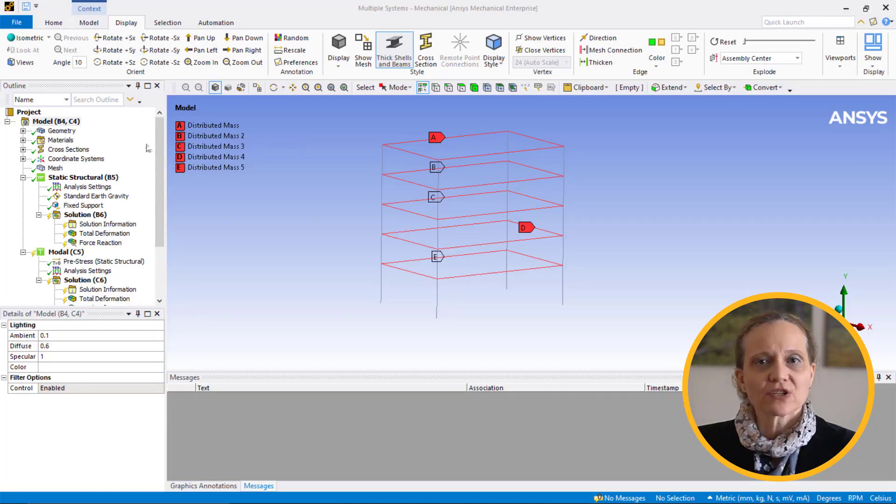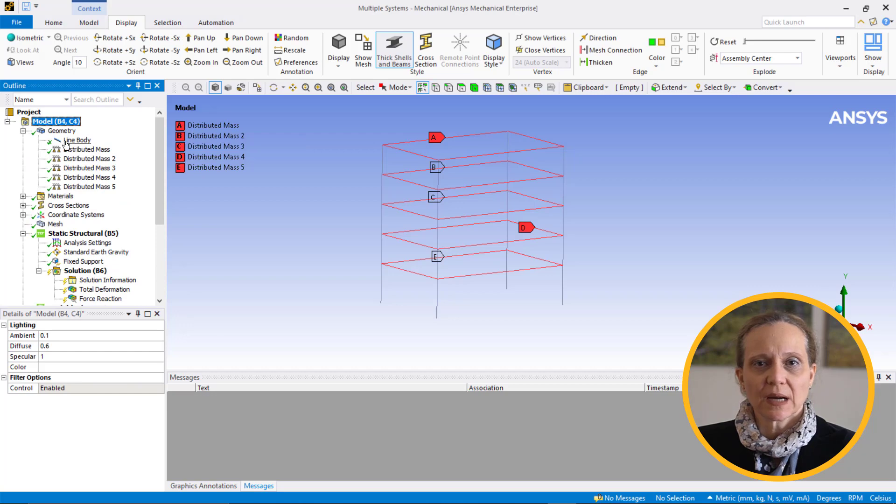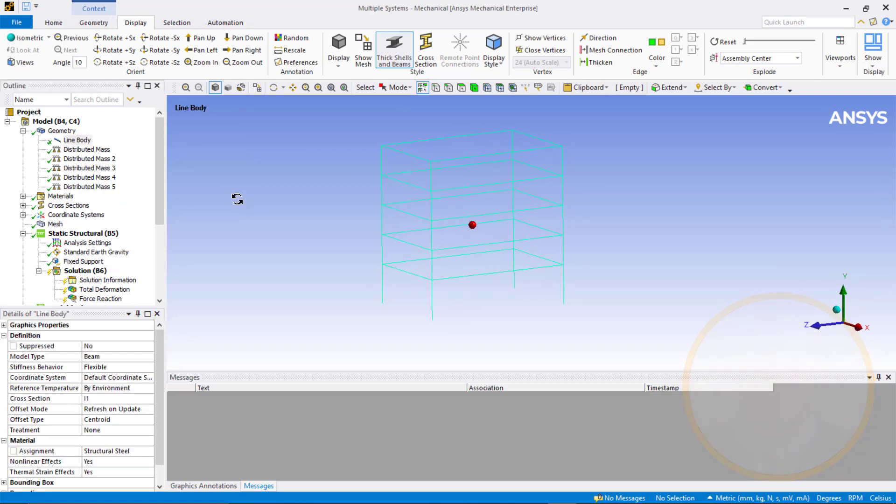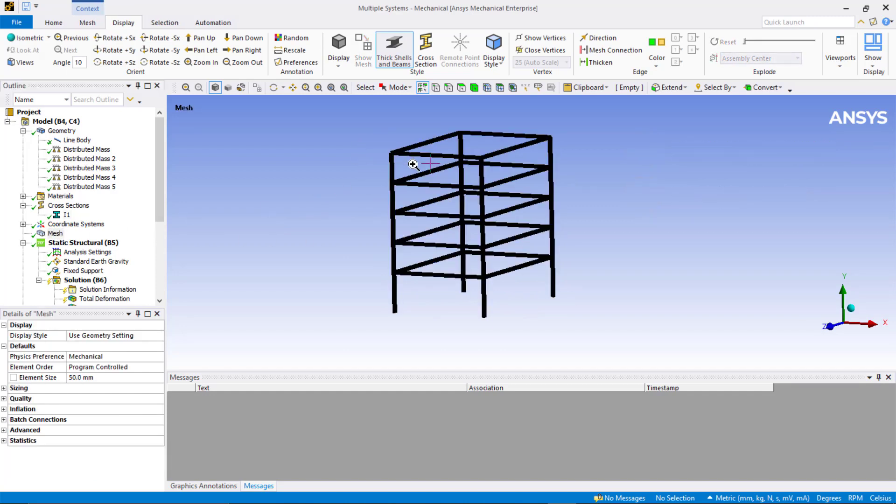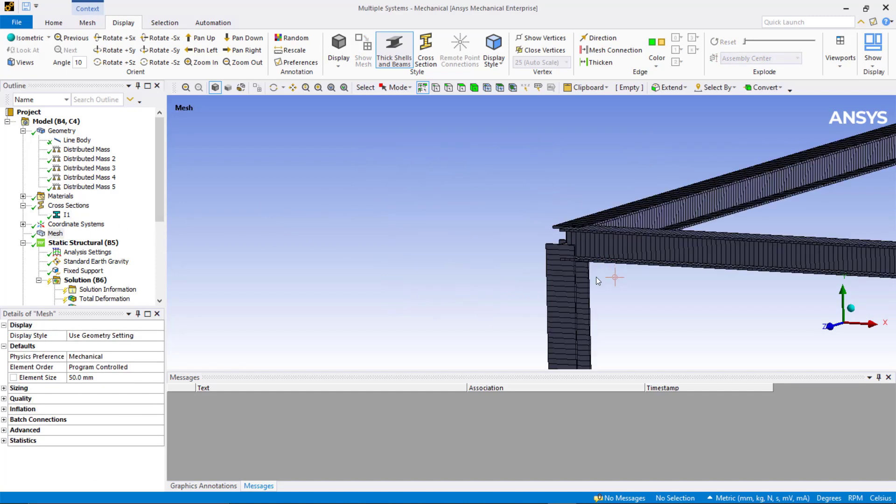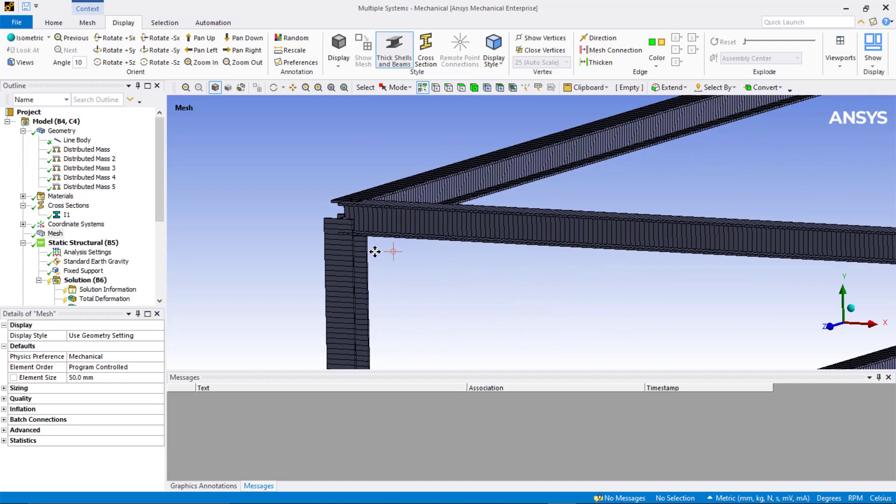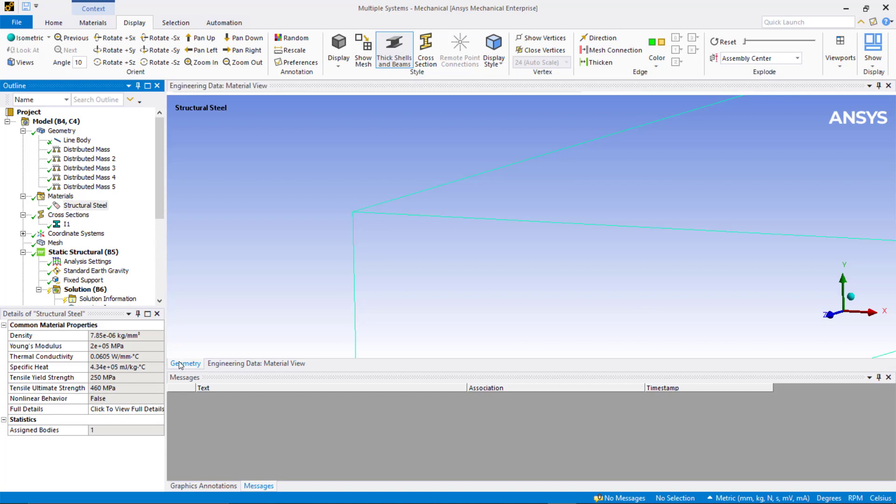Let's expand the branches in the project tree to become familiar with the model setup. The columns and the main floor beams along the outside perimeter of the building are represented with line bodies. These line bodies are already meshed with beam elements. The beam elements have been assigned cross-sectional properties consistent with the building's I-beam specifications. Material properties of all beams are assigned linear elastic structural steel.